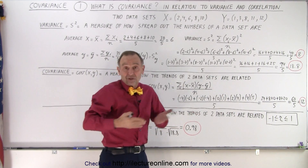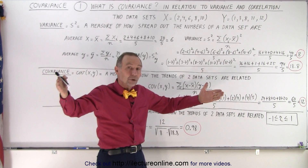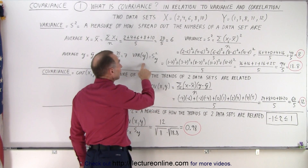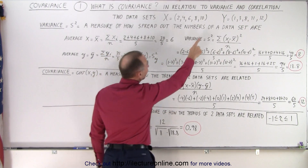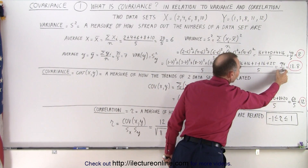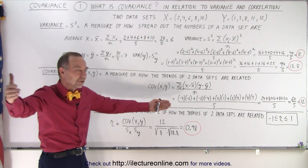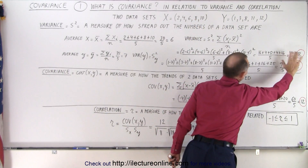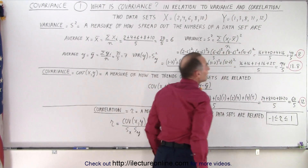The bigger the variance number, the larger the variation — the more spread out the data. When we do the same for the variance of Y, written as S-sub-Y-squared, we take each of the 5 numbers, subtract the average of 7, square each difference: 1 minus 7 squared, 3 minus 7 squared, 8 minus 7 squared, and so on. We get 94 divided by 5, giving a variance of 18.8, which is much bigger than 8. The Y data set is much more spread out — the smallest number is 1 and the largest is 12.